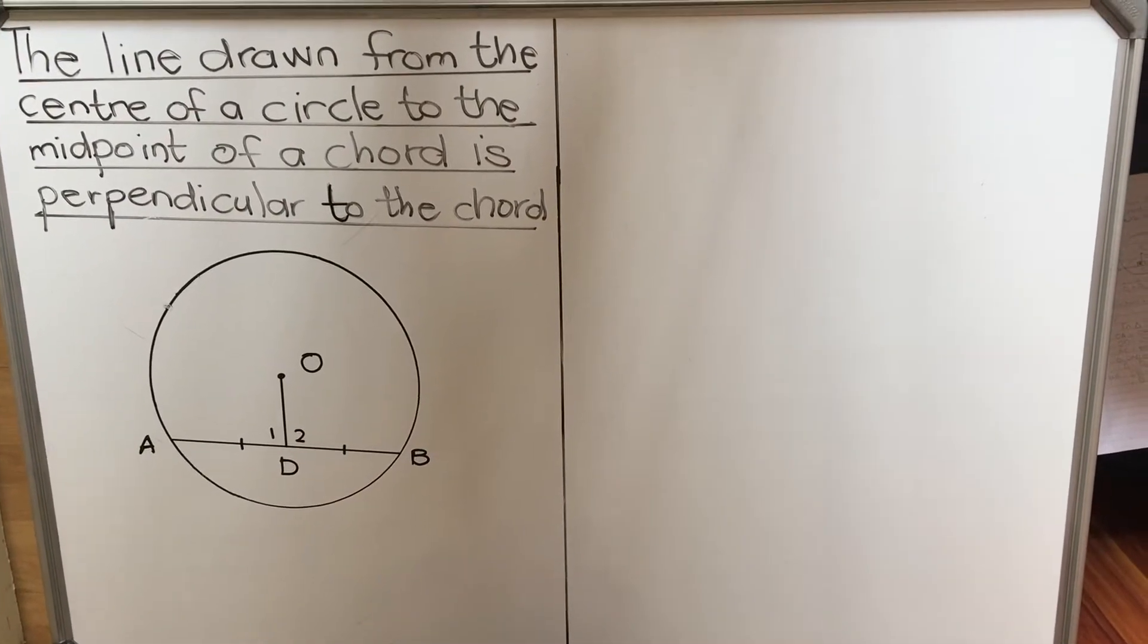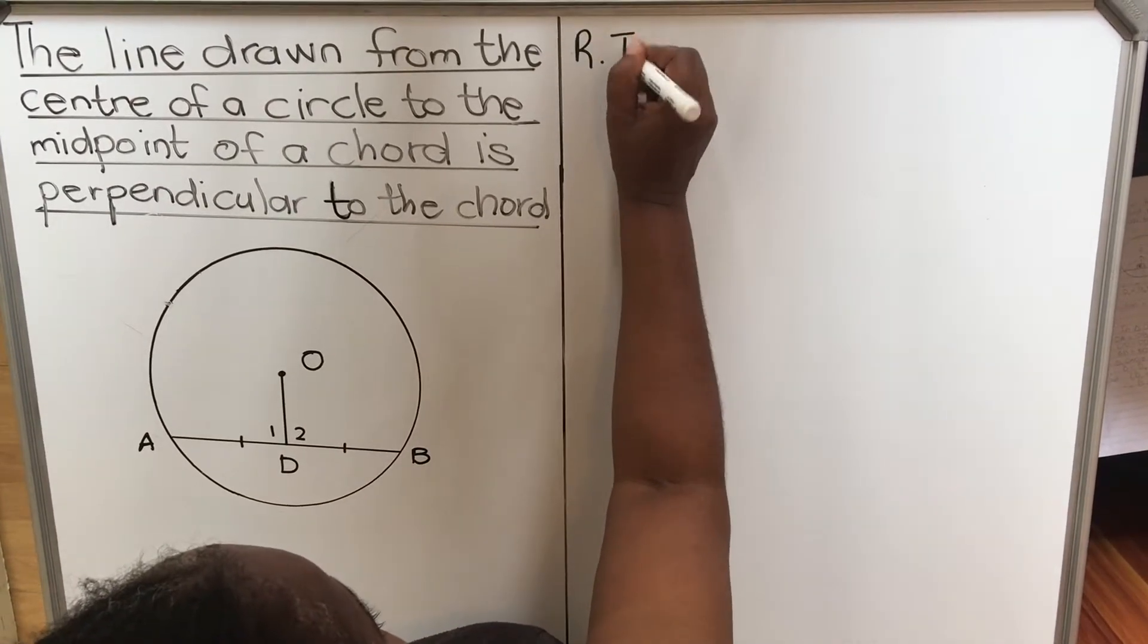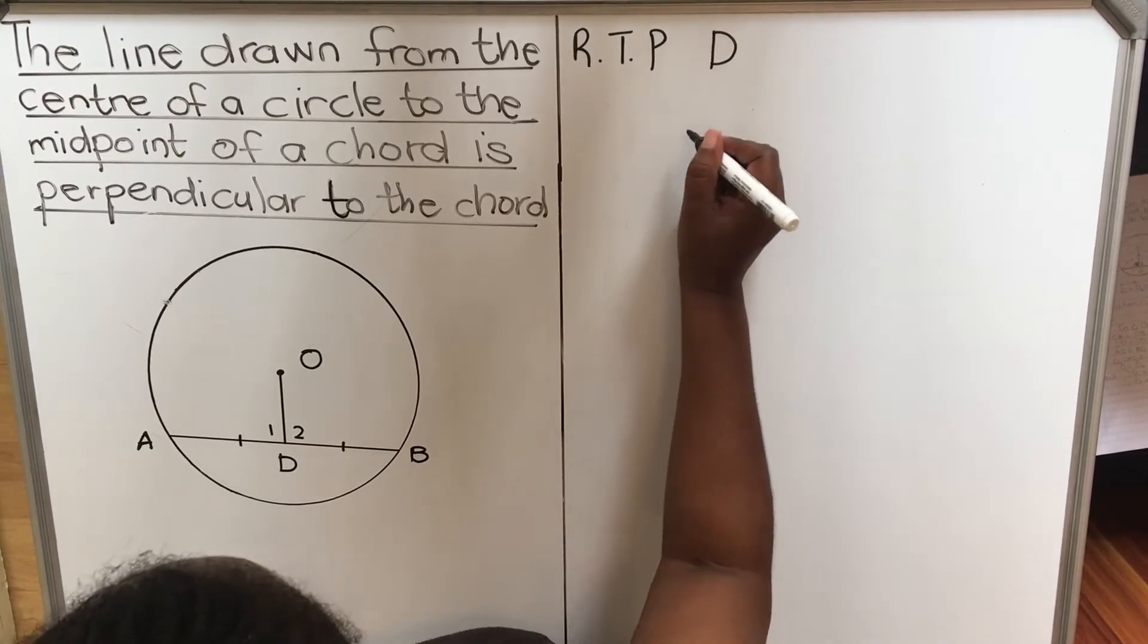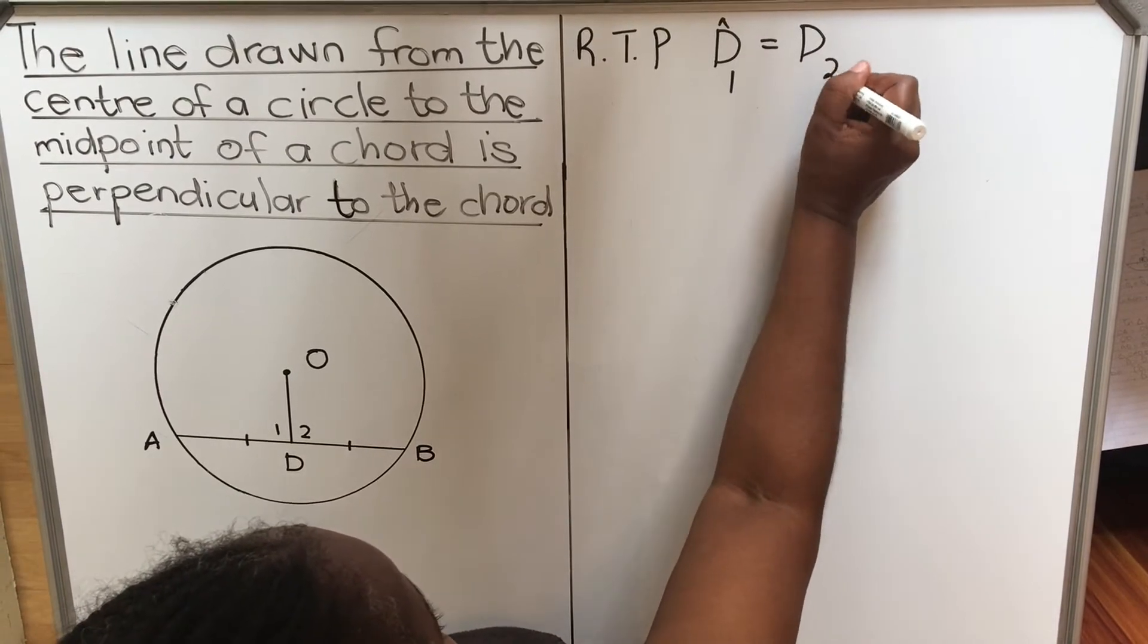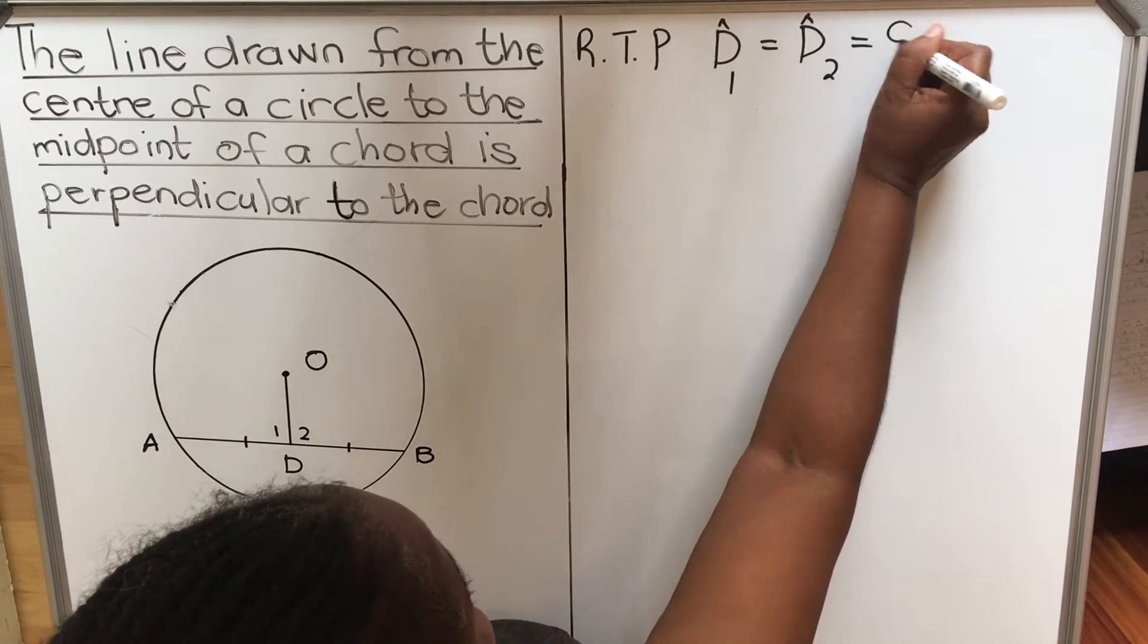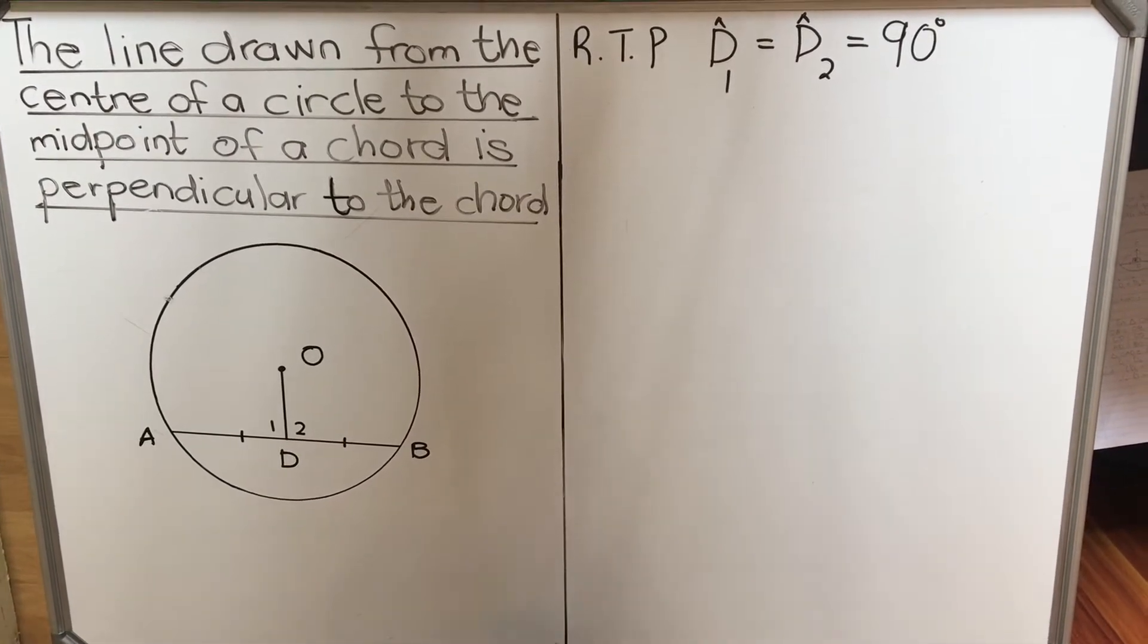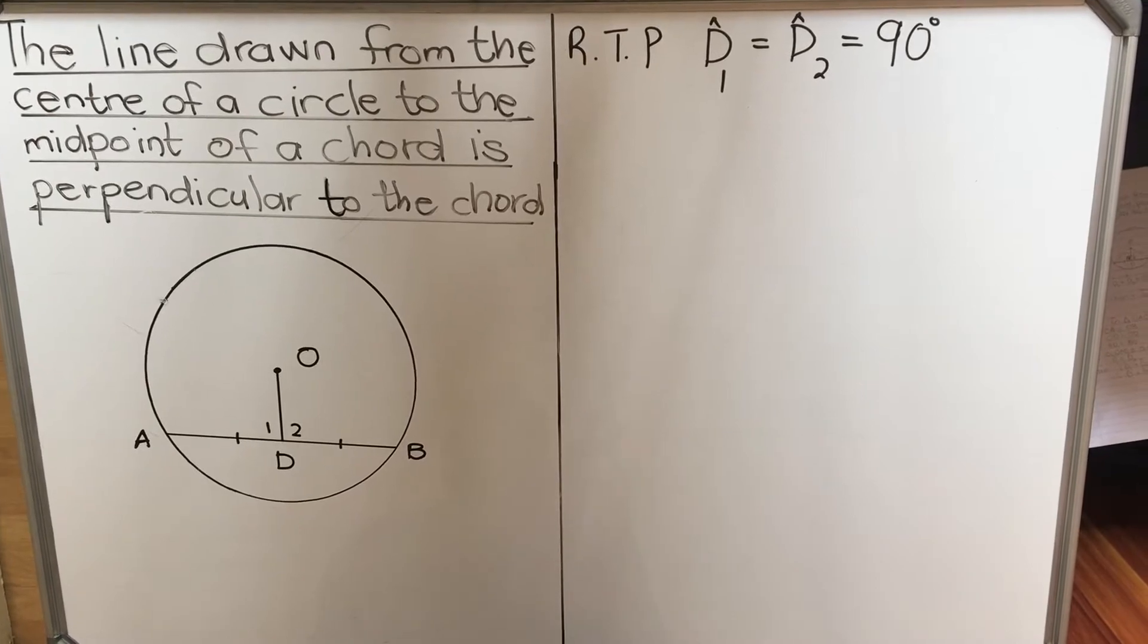Your first start, you're going to write what you are required to prove. You are required to prove that D1, this angle, is equal to D2, and if they're perpendicular they are 90 degrees. So you don't get marks for required to prove, but it helps you to see that you have arrived at your answer.